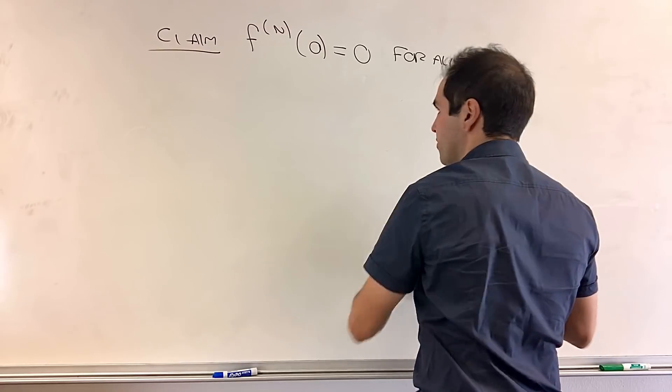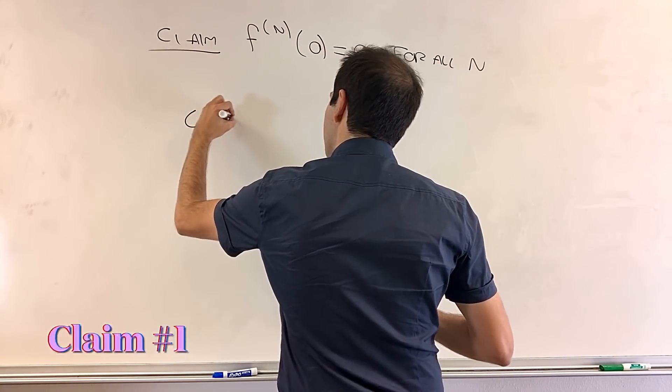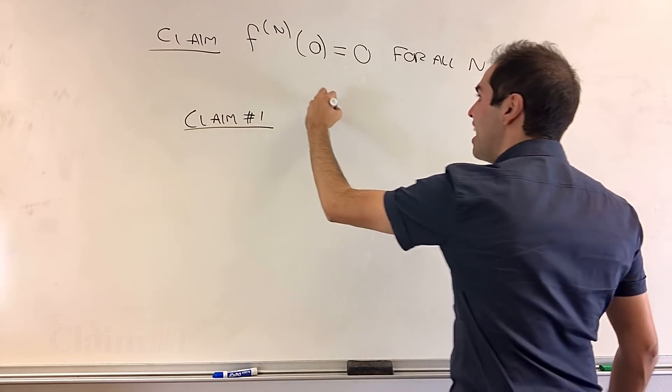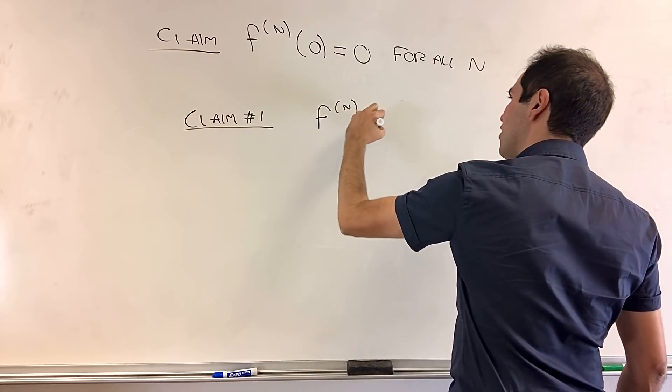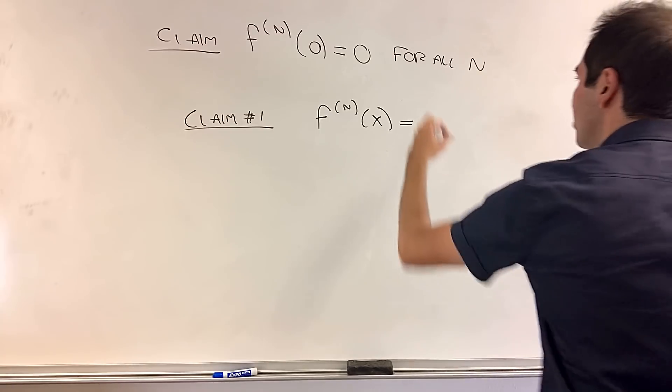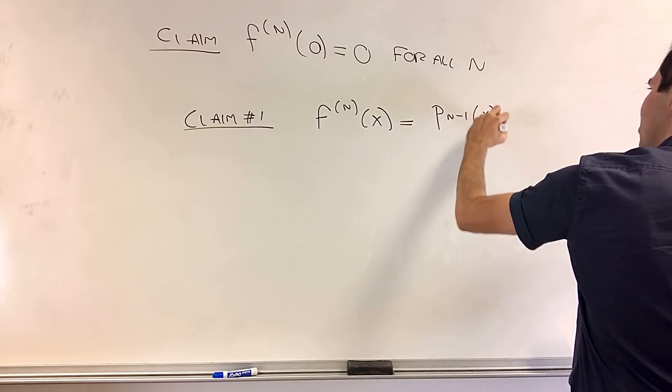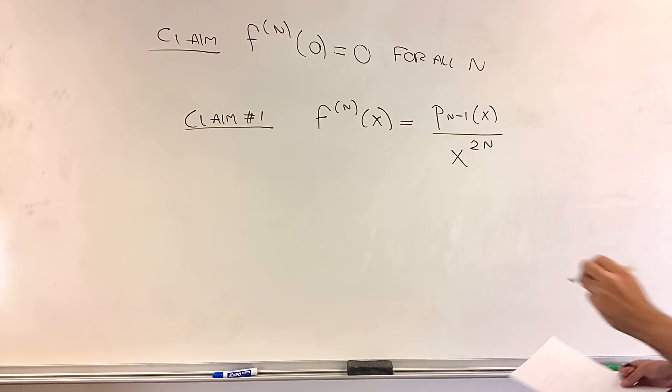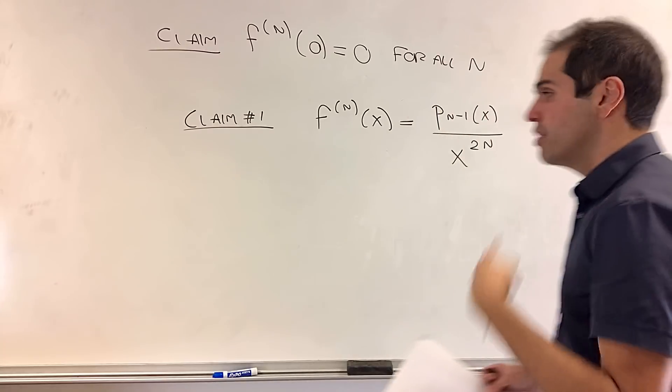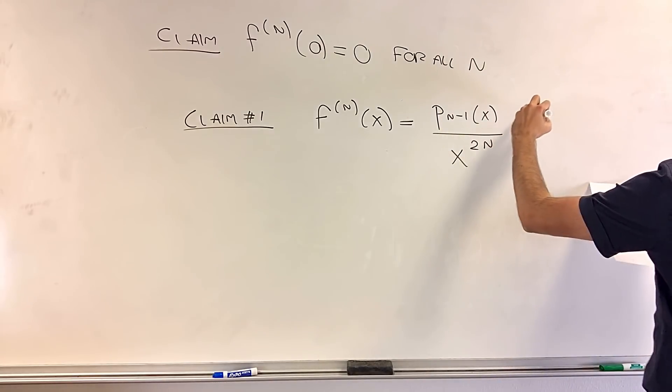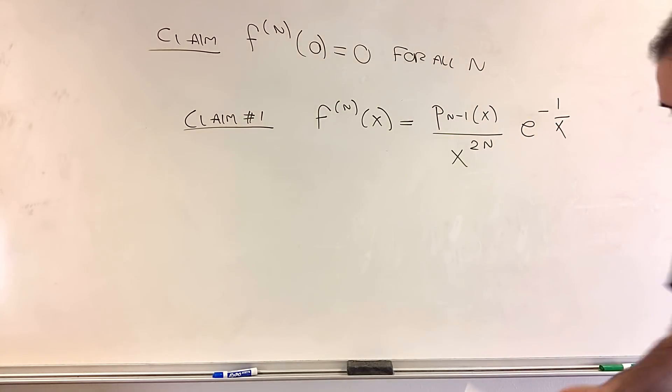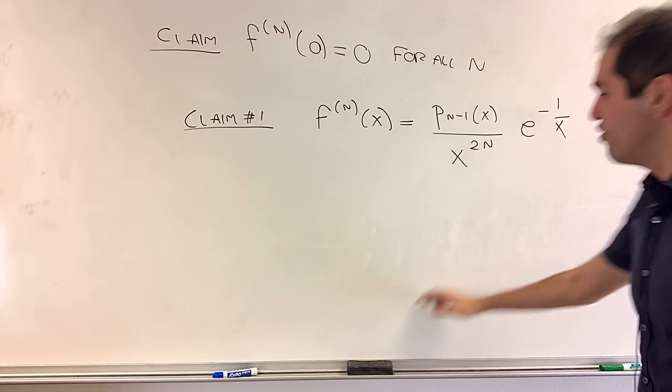And in fact, this is always true, so claim, so claim number 1, I guess, subclaim, if you wish, the nth derivative of f at x, what it is, it's a polynomial of degree n minus 1, so p n minus 1, x, over x to the 2n. So we have x squared, and this time, next time we have like x to the fourth, x to the sixth times this function, e to the minus 1 over x, or times f of x if you wish.